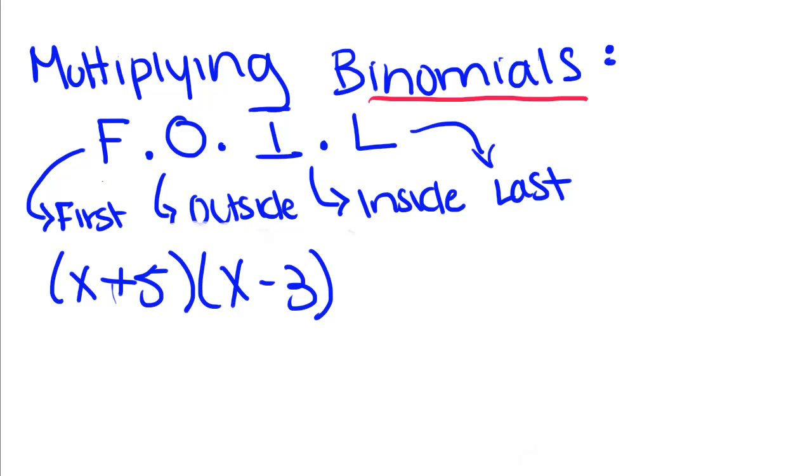So today we're going to talk about multiplying binomials. Well, a binomial is a two-term expression, and when we multiply binomials, we're going to use this method called foiling.